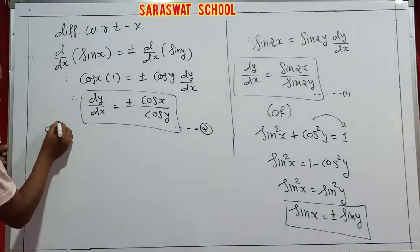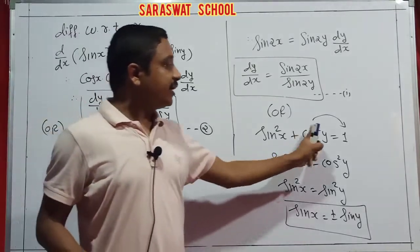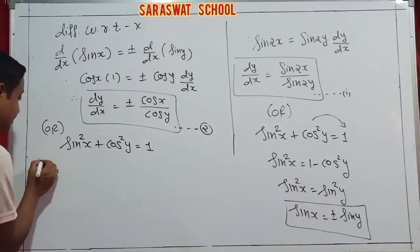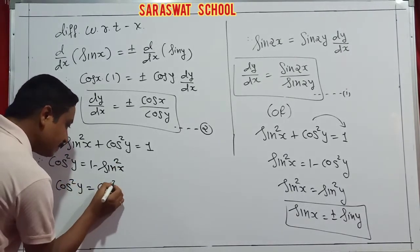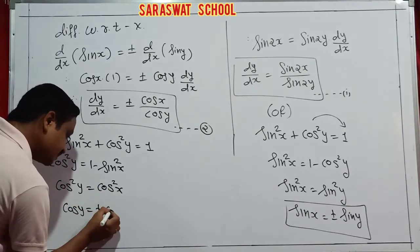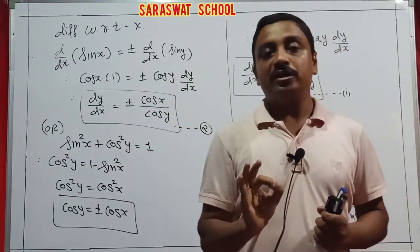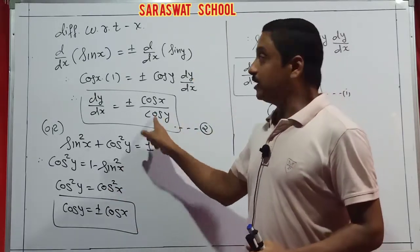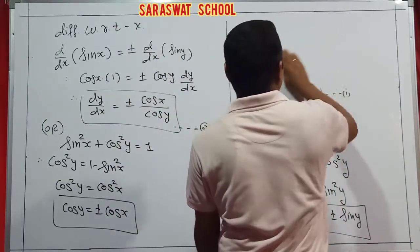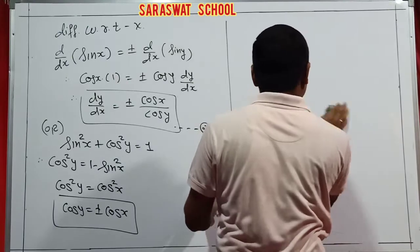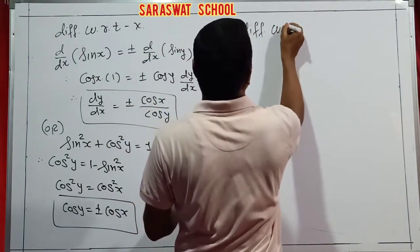One more: the same question explained differently. sin²x + cos²y = 1. This time I take cos²y to the right side, so cos²y = cos²x, meaning cos y = ±cos x. Now I apply differentiation with respect to x. The derivative of cos y is -sin y · dy/dx, and the derivative of cos x is -sin x. The minus signs cancel, leaving dy/dx = sin x / sin y. That is equation number 3.